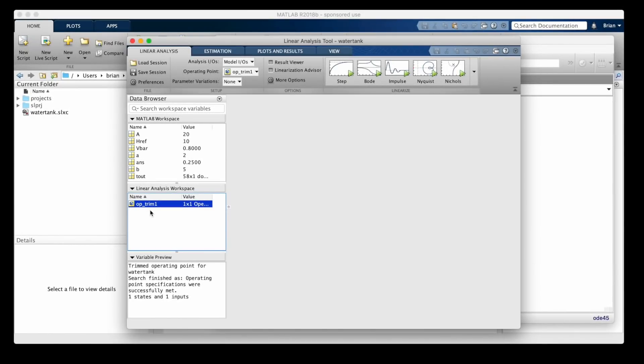Okay, now that we have a trim system, we can linearize it around the operating point that we just created, and get a linear state-space representation of our model.